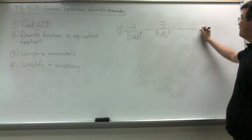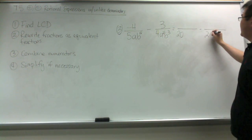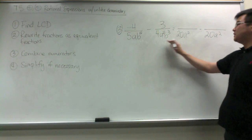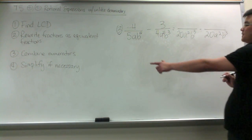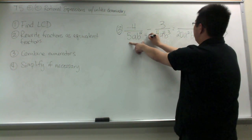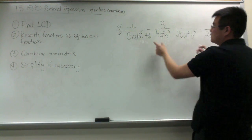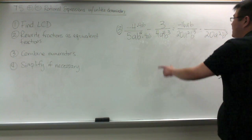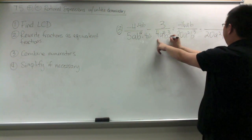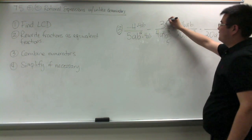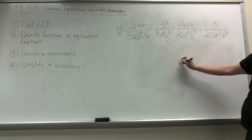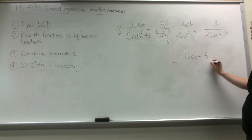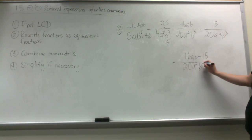In our next example, the LCD between 5 and 4 is 20, the LCD between a and a squared is a squared, and the LCD between b squared and b cubed is b cubed. We're going to multiply this denominator by 4ab to get the LCD, so we multiply the numerator by the same thing, and we get negative 16ab. Then we multiply this denominator by 5, so we multiply the numerator by 5; 3 times 5 is 15. Then we subtract: we have negative 16ab minus 15 over 20a squared b cubed.